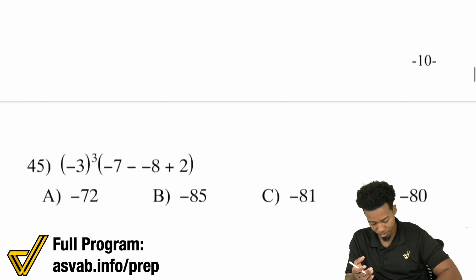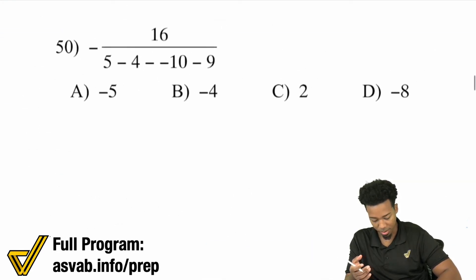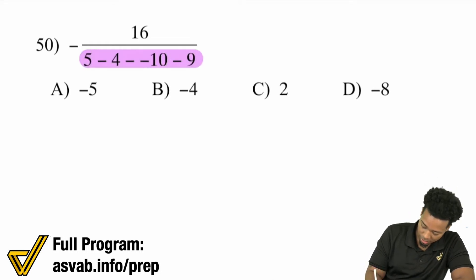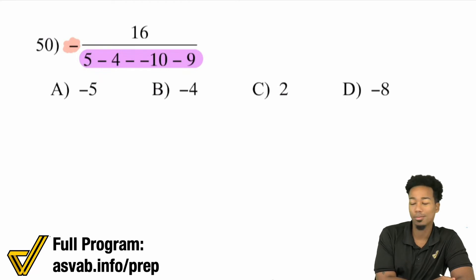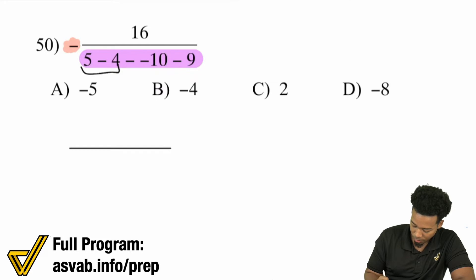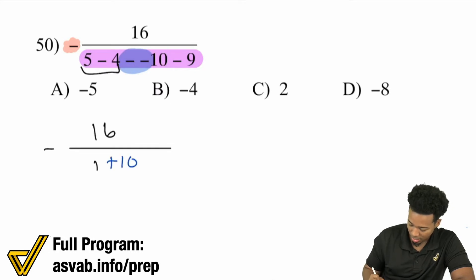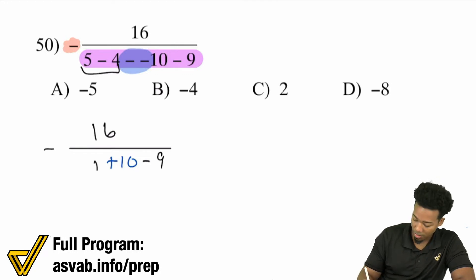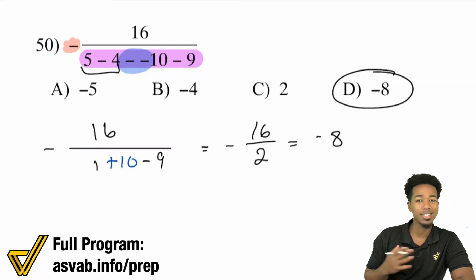Let's look at a five-step problem. We have negative 16 over an entire group. Notice that negative out front — just point it out so you don't forget it at the end; whatever the answer is, make it negative. Inside we have 5 minus 4, which is 1. Then minus negative gives plus 10, then minus 9. So: 1 plus 10 is 11, and 11 minus 9 is 2. We end up with negative 16 over 2, which is negative 8.